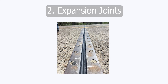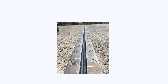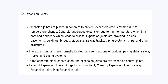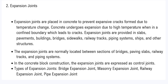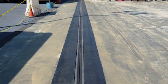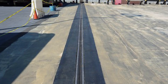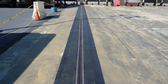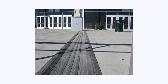Expansion joints are placed in concrete to prevent expansive cracks formed due to temperature changes. Concrete undergoes expansion due to high temperatures when in a confined boundary, which leads to cracks. Expansion joints are provided in slabs, pavements, buildings, bridges, and other structures. They are normally located between sections of bridges, paving slabs, and railway tracks.